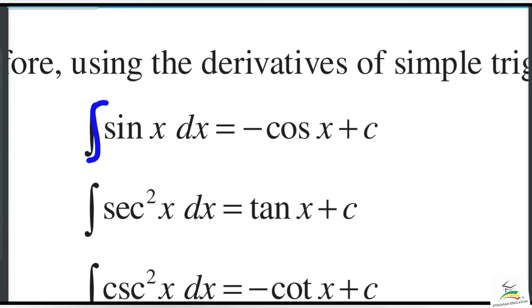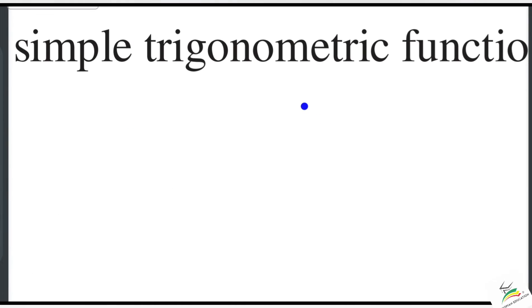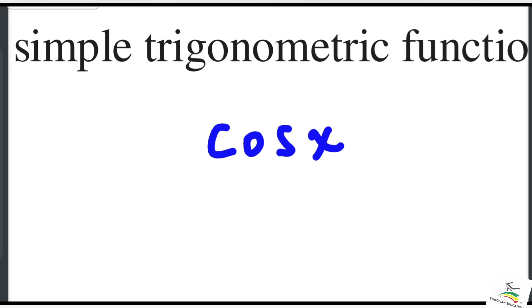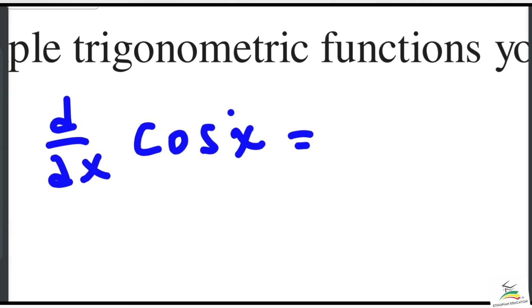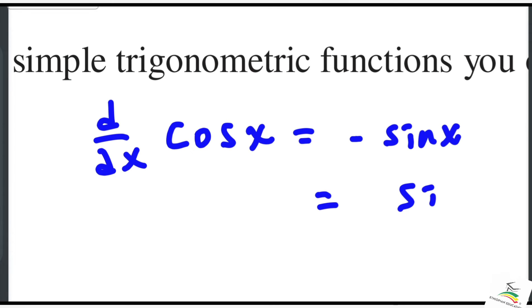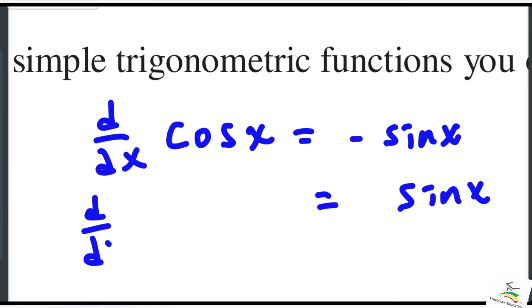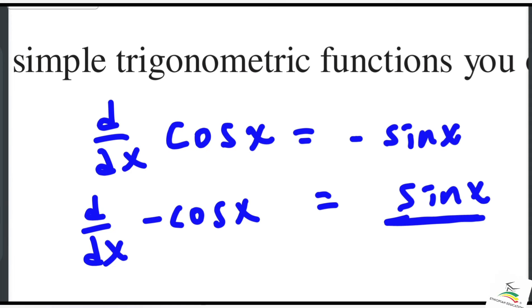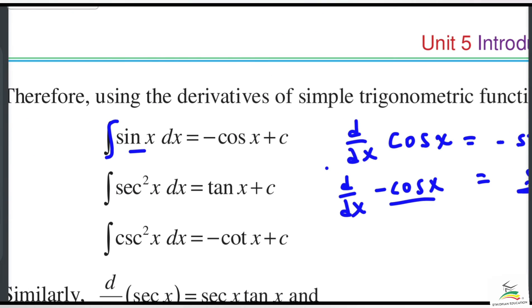For sine x: to integrate, we use the derivative relationship. The derivative — dy/dx of cos x — gives negative sine x. So that means the integration of sine x is the negative of cos x. Since the derivative of negative cos x is positive sine x, the integration of sine x equals negative cos x plus C.